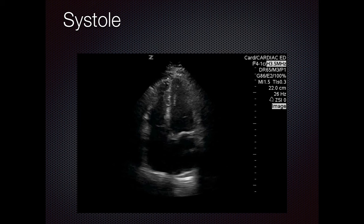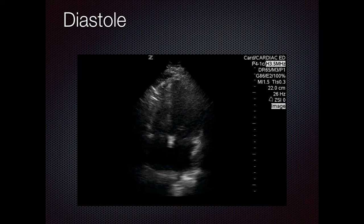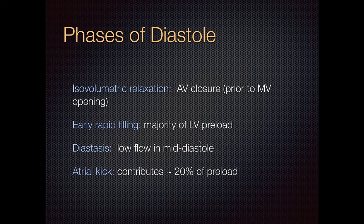At the end of systole, the aortic valve is going to close. At the initial part of diastole, the mitral valve is still closed and the ventricle starts to relax. As it relaxes, the pressure in the chamber drops. When the mitral valve finally opens, the blood in the left atrium now has an outlet and fills the left ventricle. Whatever is left at the end of diastole is squeezed out by the atrium. The stages of diastole are: isovolumetric relaxation — when the AV valve is still closed before the mitral valve opens — then early rapid diastolic filling when the mitral valve opens and the ventricle starts enlarging. The majority of LV preload fills in this phase. Then the filling slows as the pressure in the left ventricle gets higher — that's the low flow during mid-diastole. Finally, atrial kick contributes an extra approximately 20% of the preload.